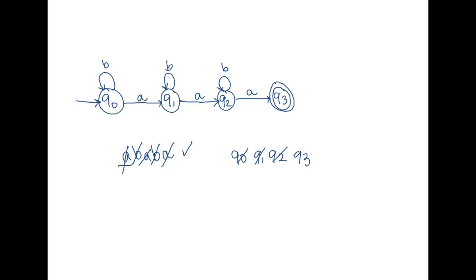Let's try one of our strings that should reject: AAB. I start reading in my machine. I'm in Q0, I read an A, I move to Q1. I read an A, I move to Q2. I read a B, I stay in Q2. Now I've read all of my string, I've ended up in a non-final state, so I'm going to reject that string. And that's what we wanted.